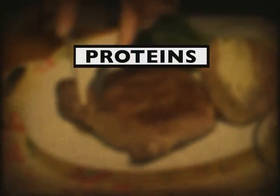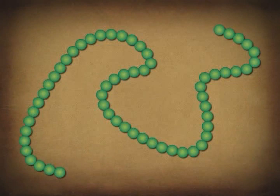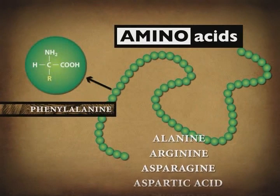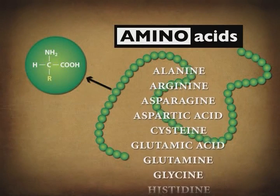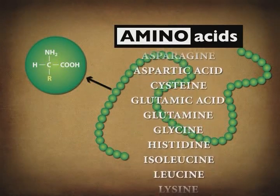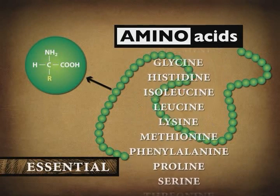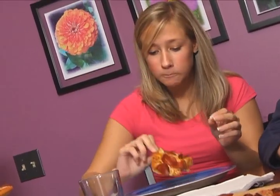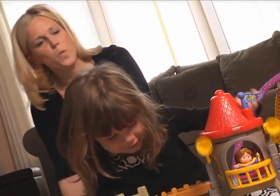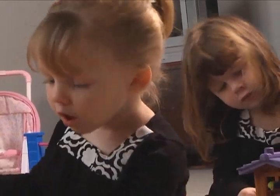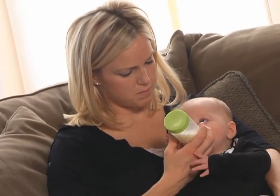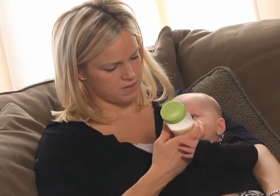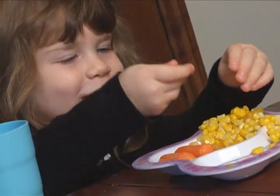Proteins, the second group of major nutrients, are made of long chains of amino acids. There are 20 different amino acids that are important to the human body. Those that our bodies cannot produce are called essential amino acids because it's essential that they be supplied by the food we eat. Unlike fat and starch, the human body doesn't store excess amino acids for later use, so they must be replenished every day. Proteins have many functions in the body. They are the main building blocks for cells and tissues. They are found in hormones, such as the human growth hormone, which helps regulate growth, and in enzymes, which increase the rate of chemical reactions in the body.